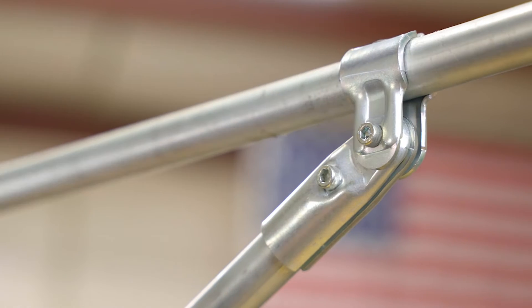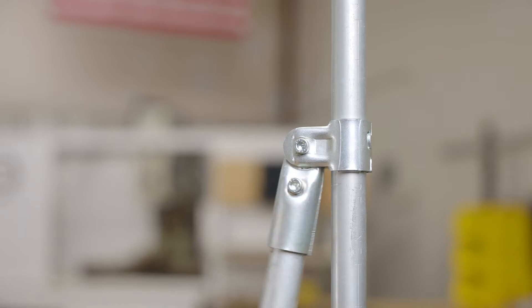The adjustable angle hinge is among the most versatile connectors in the Maker Pipe building system. Before I show you how to put it together, let's talk about a few features and see how it's commonly used in DIY pipe projects.